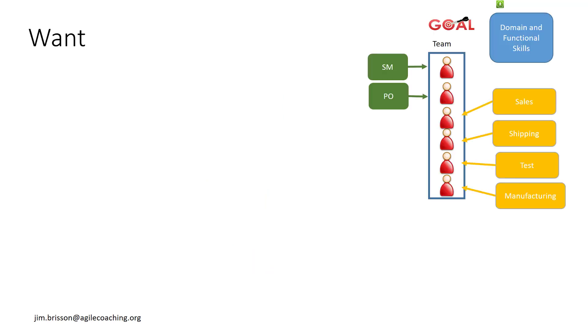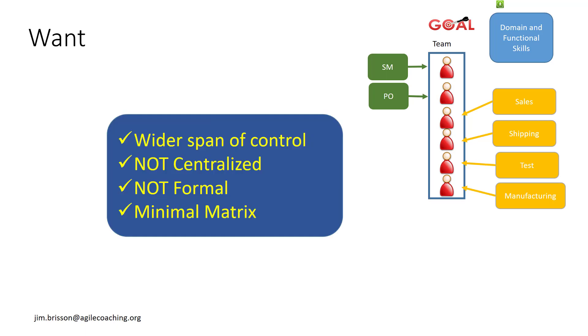So to summarize the four attributes of organizational structure, we want wider span of control since we'll need less management. We want decentralization so decisions can be made at the lowest level. We want informality, few rules, and we want matrix within the team with essentially a project and functional structure all within one team if we can do that.